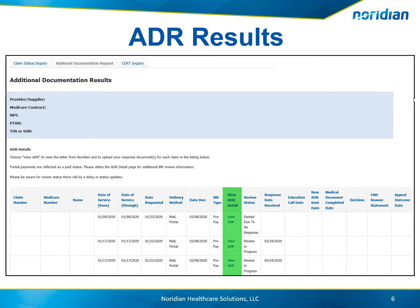The ADRs that fit your search criteria will display. The results will show the following: claim number, Medicare number, beneficiary name, date of service, date requested, and delivery method.